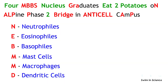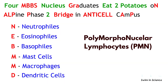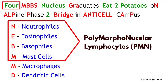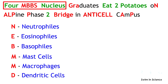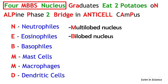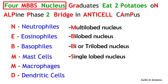Some immune cells are called polymorphonuclear lymphocytes due to their lobed nucleus. Here, 'MBBS nucleus' represents the number of lobes, and 'four' refers to the first four immune cells. Accordingly, neutrophils have a multi-lobed nucleus, eosinophils have a bi-lobed nucleus, basophils have a bi- or tri-lobed nucleus, and mast cells have a single-lobed nucleus.